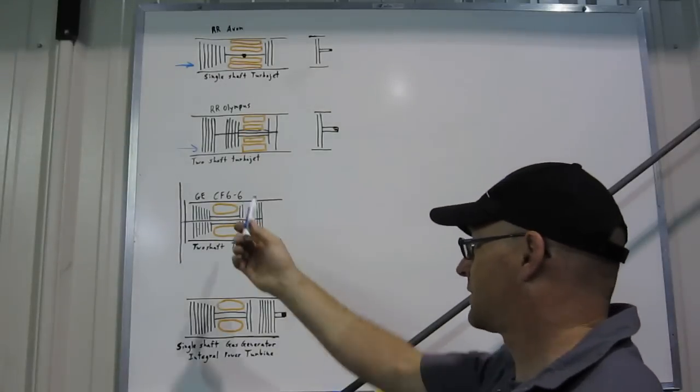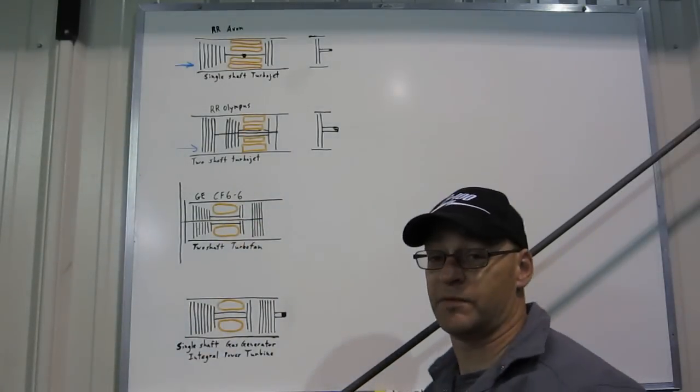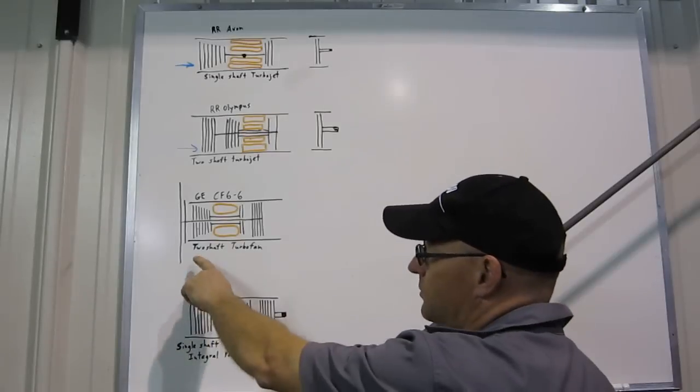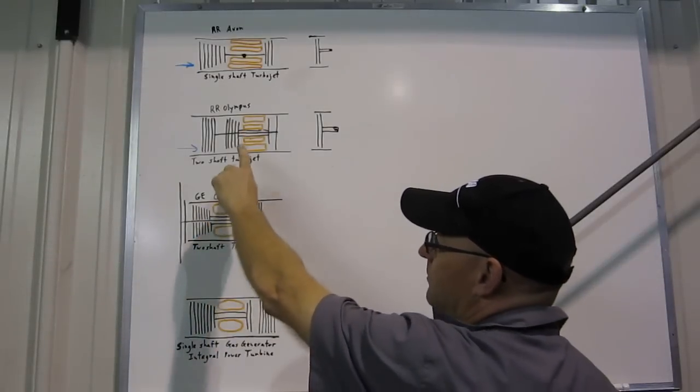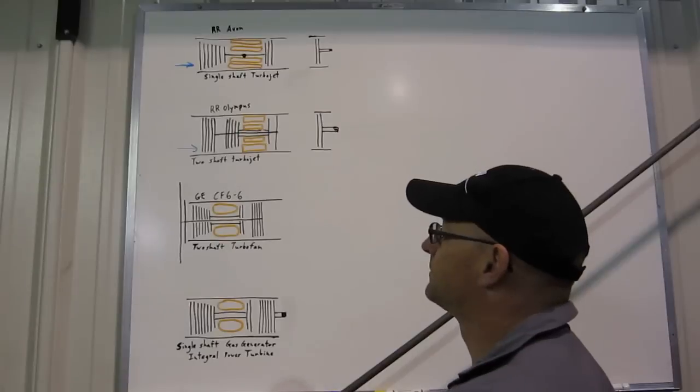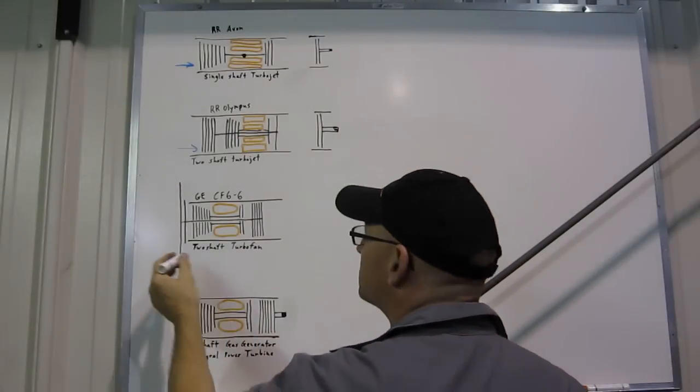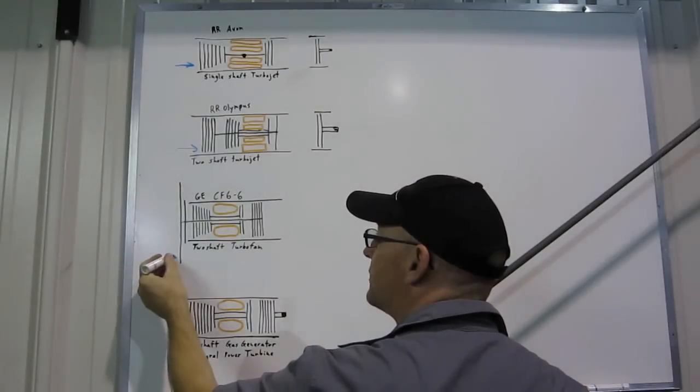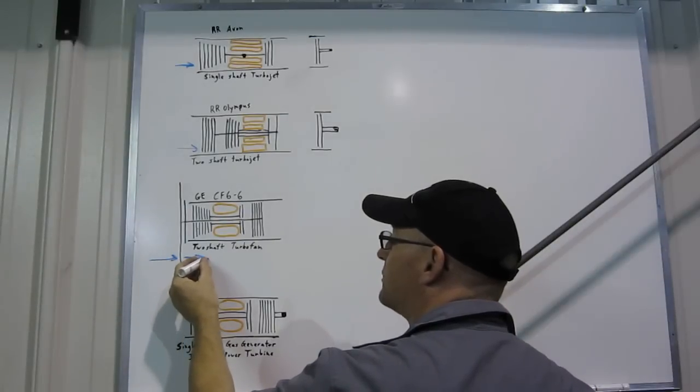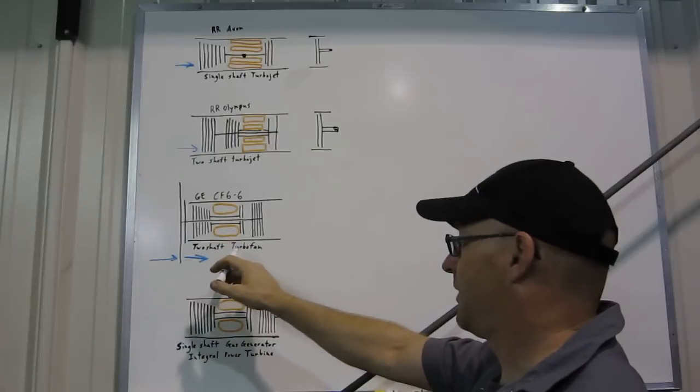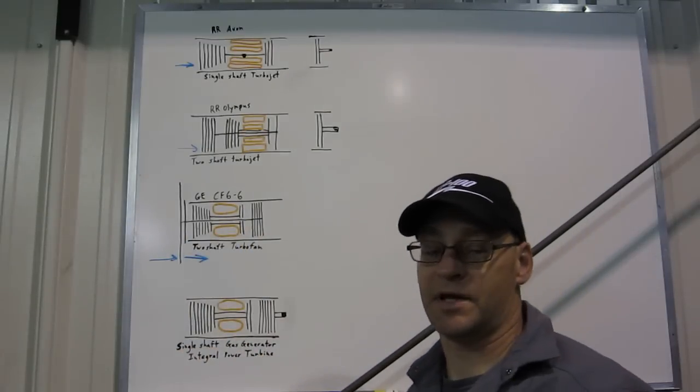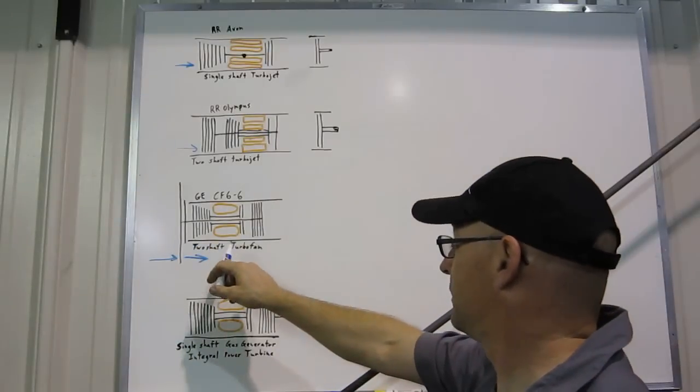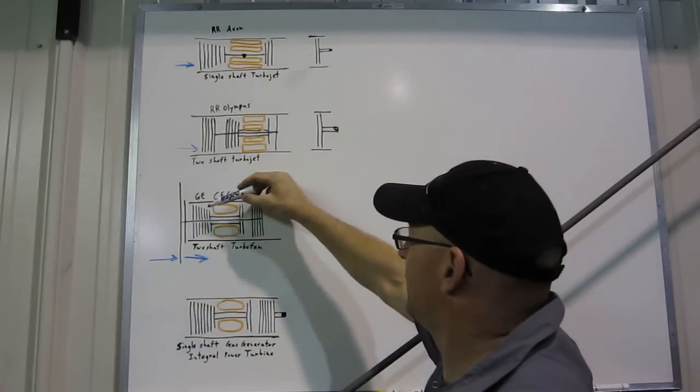Now the CF-6, which is an early airliner turbofan engine, is also a two-shaft engine. What makes it different from a two-shaft turbojet? Well, the engine intake is this large in a turbofan, and some of the air going into the engine intake gets bypassed around the engine. So that's why it's called a turbofan. It could be called a bypass turbojet.